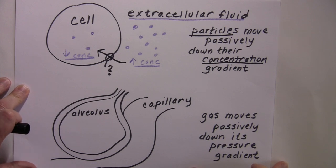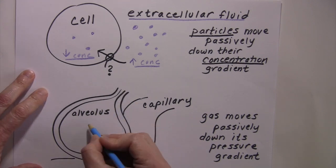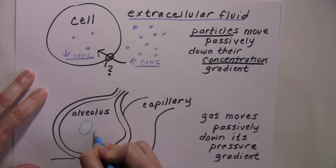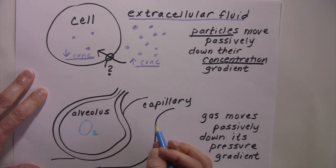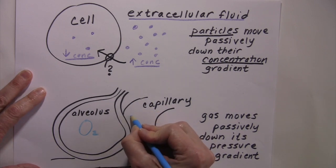They always move passively, except they move down a pressure gradient. If we take a look at this scenario, let's say that inside of the lung there is a high oxygen pressure and that inside of the blood servicing that alveolus there is a lower oxygen pressure.